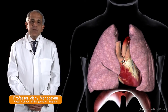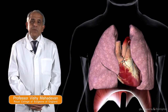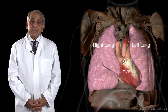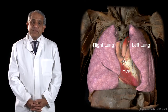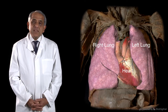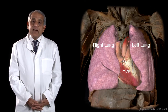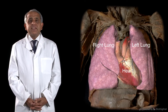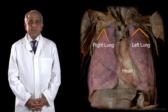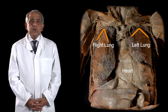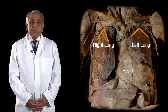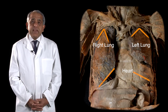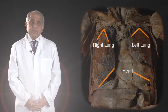Together, the two lungs occupy two-thirds or more of the thoracic cavity. Each lung is an approximately conical structure with a narrow apex superiorly and a broad base on the inferior aspect.